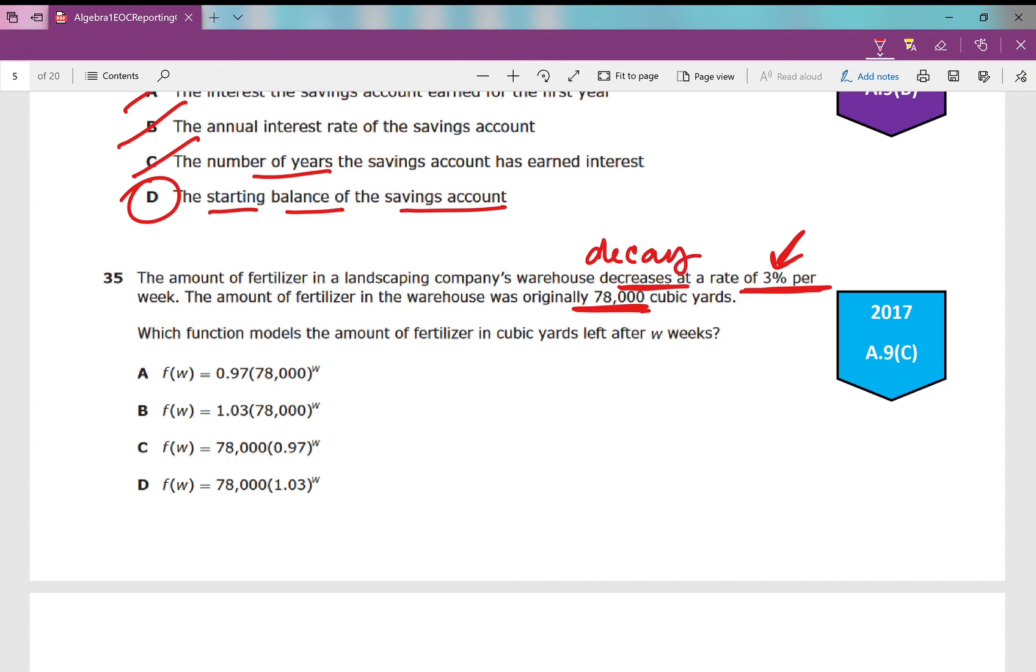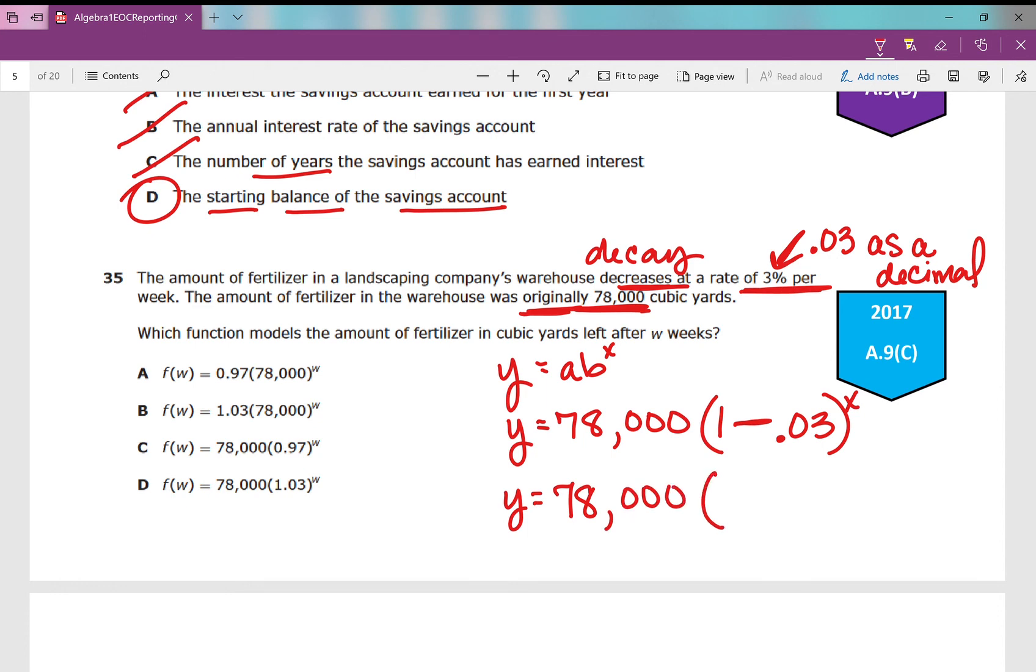If it decreases at a rate that is a percent, that's exponential decay. Let's set up what this equation would look like. We know this is exponential because it's decreasing at a rate that's a percent—it's decay. We need to think of percents in terms of decimals. What is three percent as a decimal? It's 0.03. My initial amount is what? Y equals a times b to the power of x. So y is going to equal my initial amount. If it was originally 78,000, then that's my initial amount. It's decreasing at a rate, so that's one minus—I subtract 0.03 raised to the power of x. Y equals, when I simplify this, what is one minus 0.03? It's 0.97 raised to the power of x.